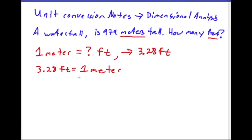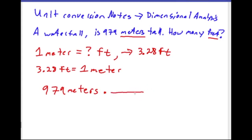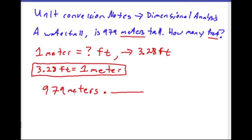Now that I have this equivalency, I can convert my meters into feet. First, I write my known value — that's 979 meters, including the units — then multiply by the ratio I just came up with. If I have meters on top, I need to put meters on the bottom to cancel them out, which means feet goes on top: 3.28 feet over one meter.